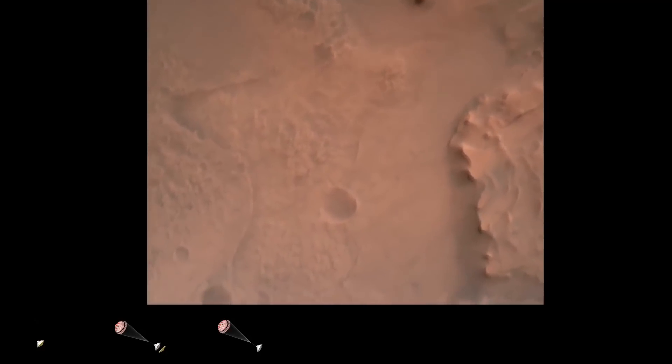Perseverance is continuing to descend on the parachute. We are coming upon the initialization of terrain relative navigation and subsequently the priming of the landing engines. Our current velocity is about 90 meters per second at an altitude of 4.2 kilometers.